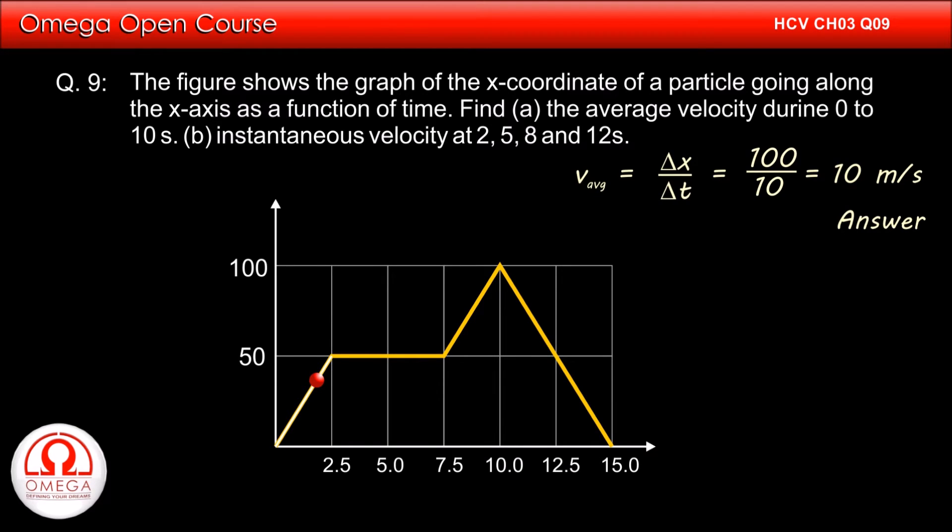Now, the slope is height divided by base, or 50 divided by 2.5, or 20. Thus, the instantaneous velocity at t equals 2 seconds is 20 meters per second.